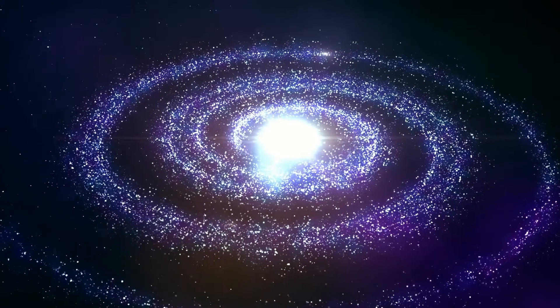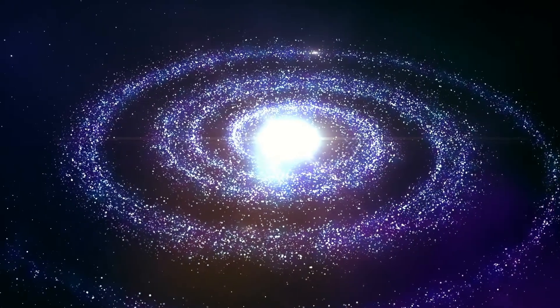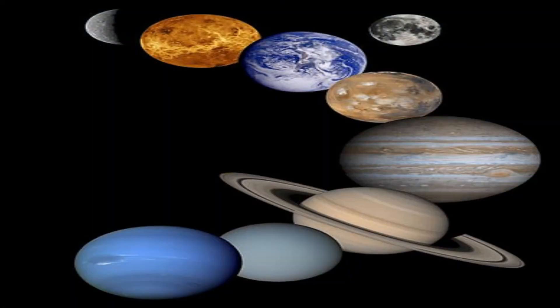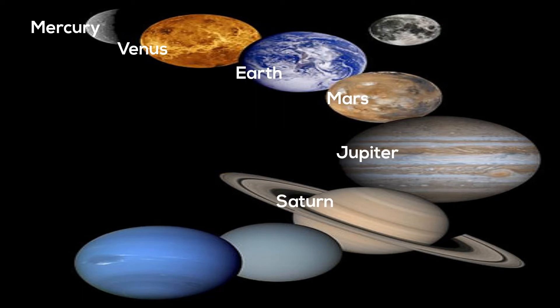According to this definition there are 8 planets: Mercury, Venus, Earth, Mars, Jupiter, Saturn, Uranus, and Neptune.